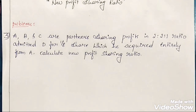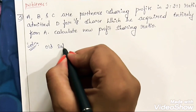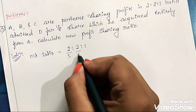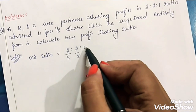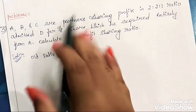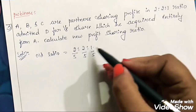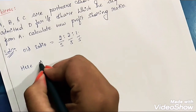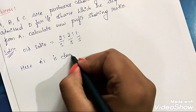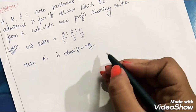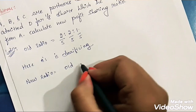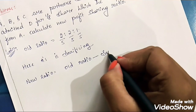First of all, we need to write the old ratio. Old ratio of all the partners is 2:2:1, which is 2/5 : 2/5 : 1/5, since the total is 2+2+1 = 5. So 2 parts out of 5 belong to A, 2 parts out of 5 belong to B, and 1 part out of 5 belongs to C. This is the old ratio. Now here only A is sacrificing. We know the formula for new profit sharing ratio: new ratio = old ratio minus sacrificing ratio.